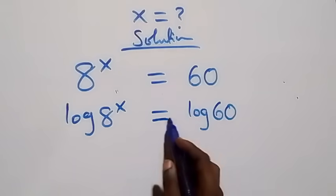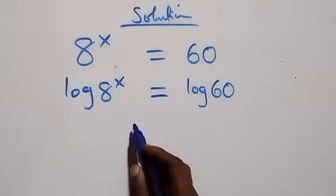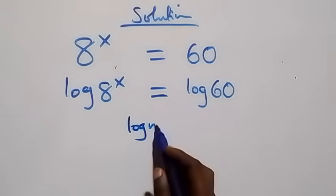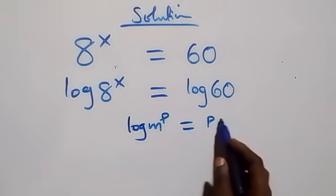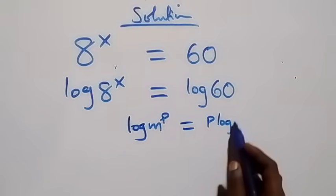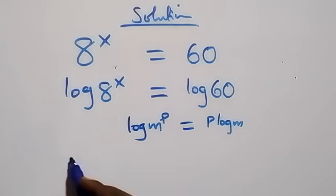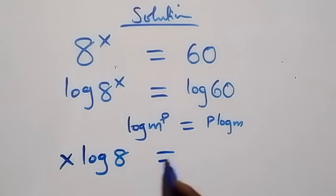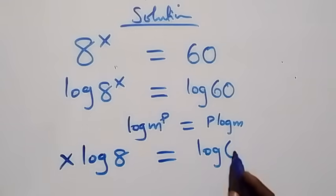Here we apply the power rule of logarithms: log m raised to power p is the same as p times log m. So this becomes x times log 8 equals log 60.